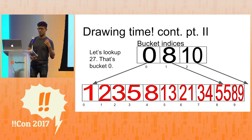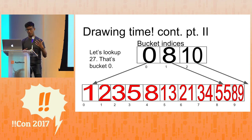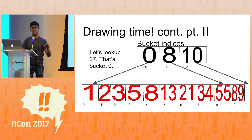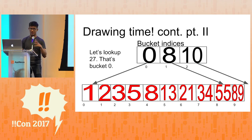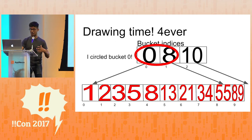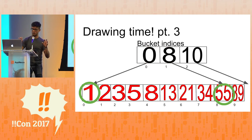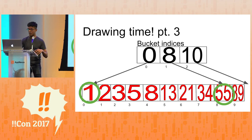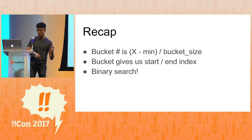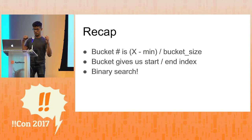How would you use this in an example? Let's try to look up 27. So 27 is bucket 0. Why? 27 minus the minimum value (which is 1) is 26, divided by the bucket width of 44, equals 0. So that's bucket 0 — which tells you to look at the elements in that range, and then you can just binary search. Quick recap: figure out what bucket you're in by subtracting from the minimum and dividing by the bucket size; the bucket tells you where to start and end your search; then binary search.